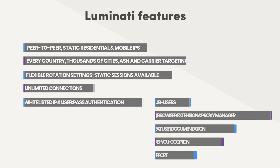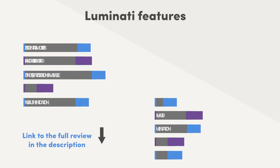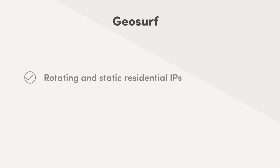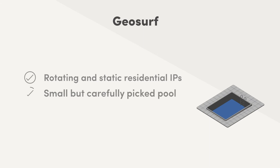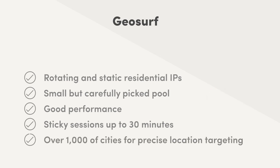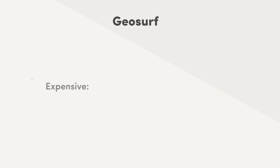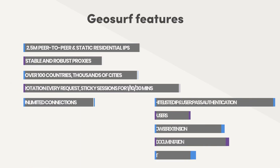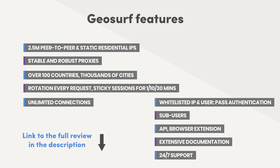If you're interested in Luminati, here's a list of the most relevant features, or you can find a full review using the link in the description. For quality seekers interested in precise geotargeting, there's GeoSurf — a VPN and proxy provider that sells both rotating and static residential proxies for Instagram. Its pool is small, picked, and maintained, and we confirmed that by running extensive performance tests on the rotating IPs. The results were good and the proxy servers stable. Sticky sessions up to 30 minutes make even the peer-to-peer option suitable for account management, though you should probably pick static proxies for that. GeoSurf allows choosing from over 1,000 cities for precise location targeting. But quality proxies come at a price — GeoSurf is one of the most expensive providers in the market, with residential IPs starting from $450. If you want to know more about GeoSurf, here's a list of its features, or you can find a full review using the link in the description.